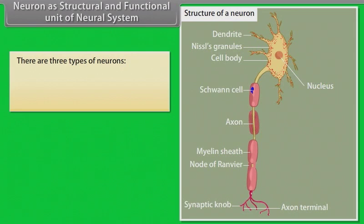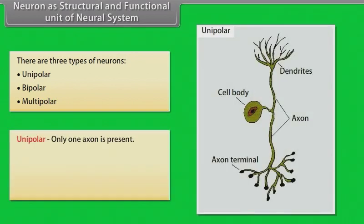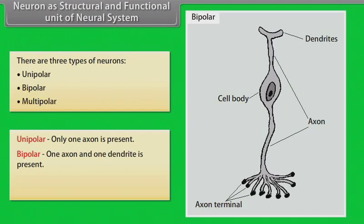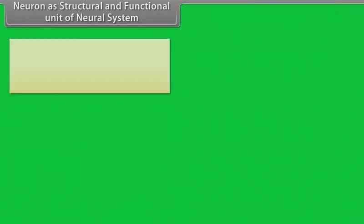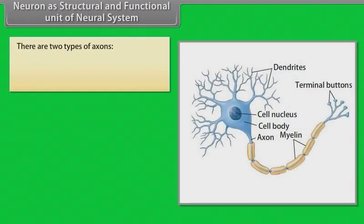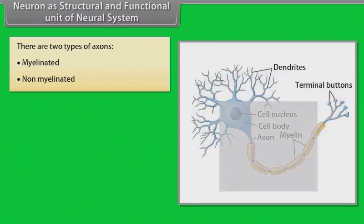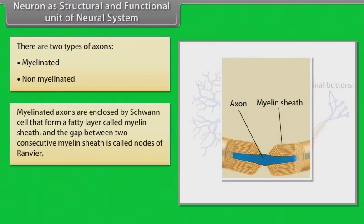There are three types of neurons: unipolar, bipolar, and multipolar. In a unipolar neuron, only one axon is present. In a bipolar neuron, one axon and one dendrite are present. In a multipolar neuron, one axon and two or more dendrites are present.